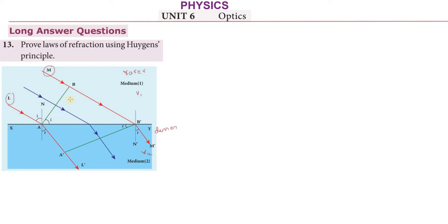It reflects the angle of incidence. When point A meets the surface — that is, the angle of incidence — point B is still yet to touch the surface. A has already reached the surface; B is still traveling. A is not yet refracted — A and B, B is still yet to travel.